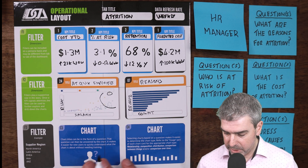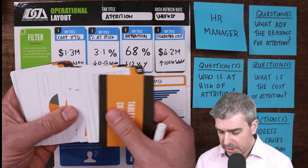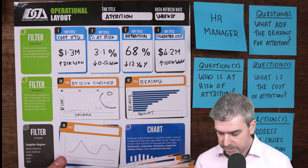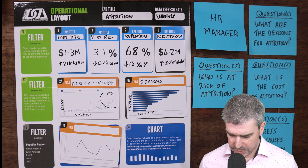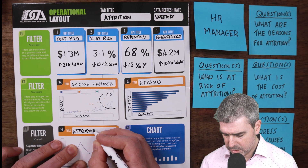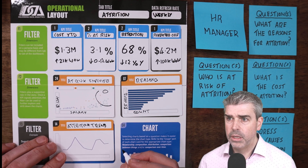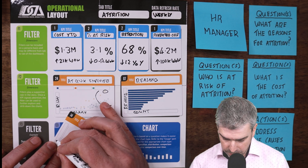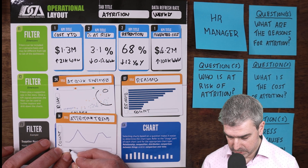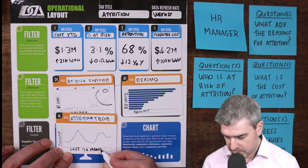Something to look at as well is the trend over time — how has attrition been changing? Are these reasons a recent thing? We could do a line chart for the attrition trend, with count on the Y-axis and the last 12 to 24 months on the X-axis, so we can get some seasonality in there.